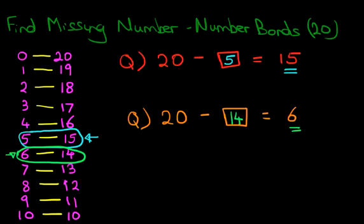So that is how we find the missing number with number bonds up to 20. It's very, very simple. First, learn how to write these numbers down on the left. Once you do that, eventually you will slowly begin to learn them off by heart.